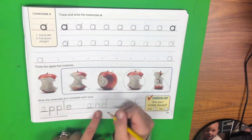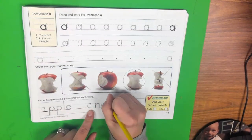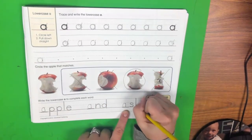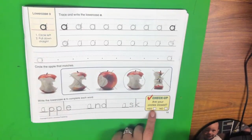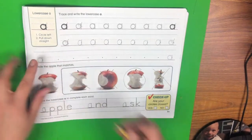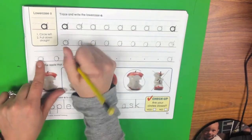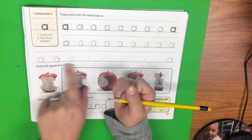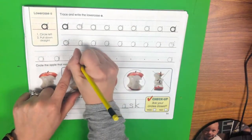And then you need to trace the other letters to make apple, and, and ask. Apple and ask. Are circles closed? Are they all closed? Are the circles closed like this? Or do you have open circles like this? Our circles need to be closed, not open. So we want to close them.